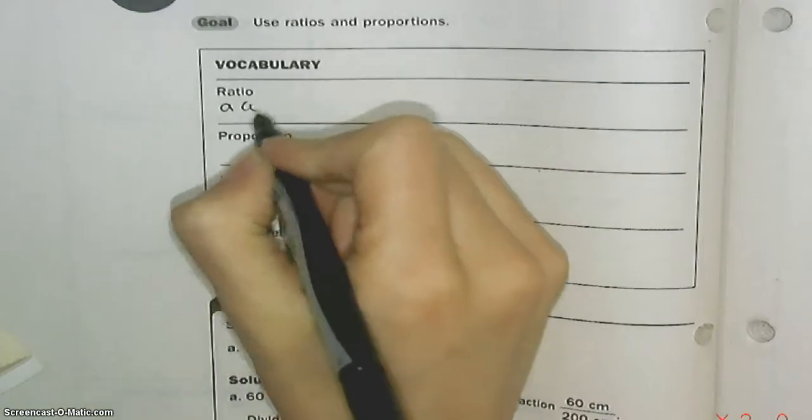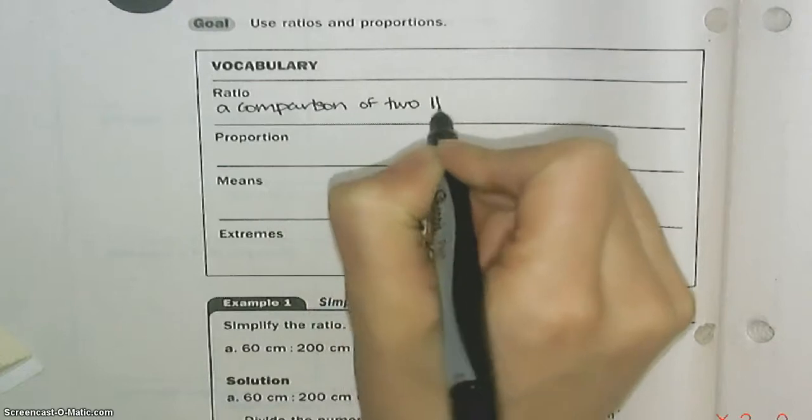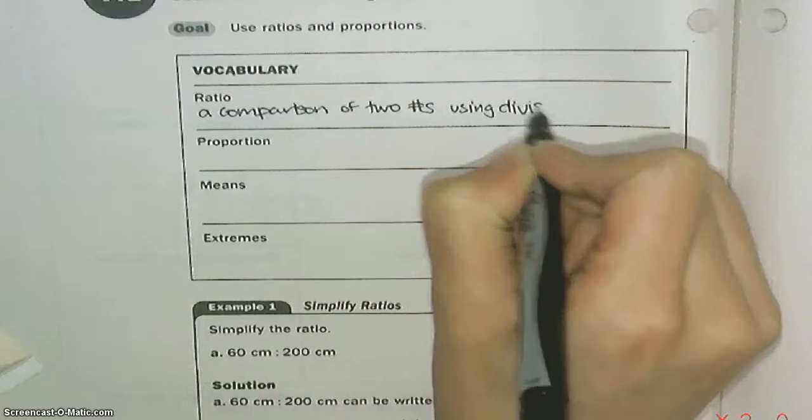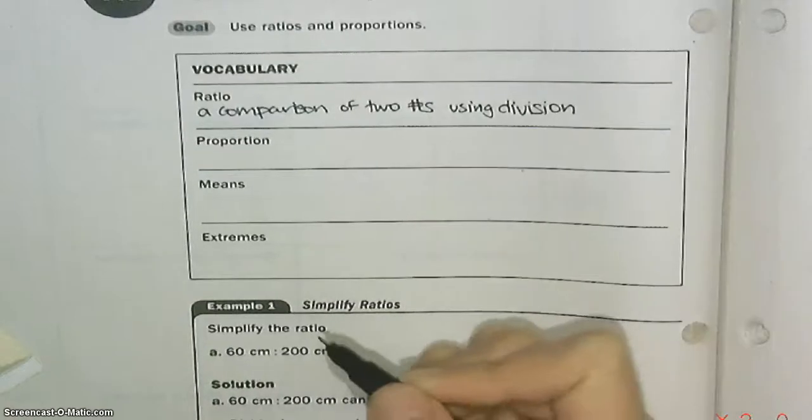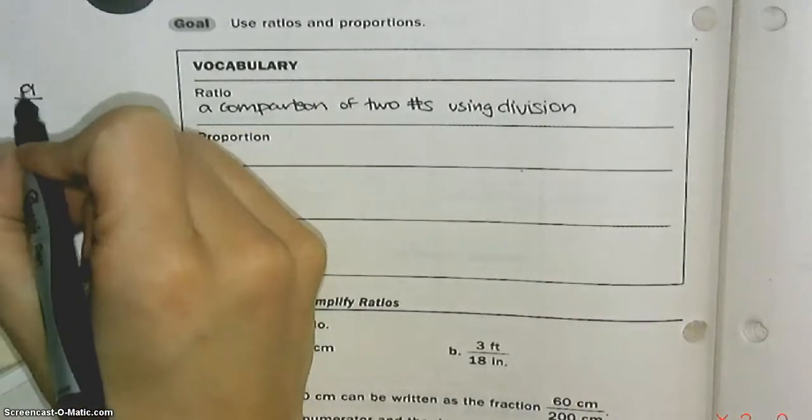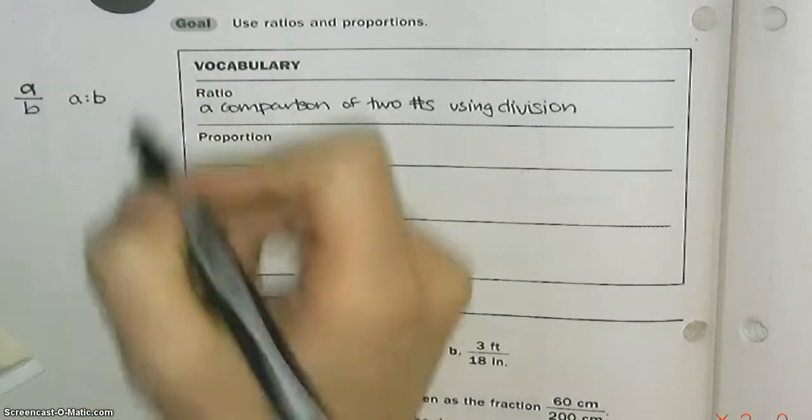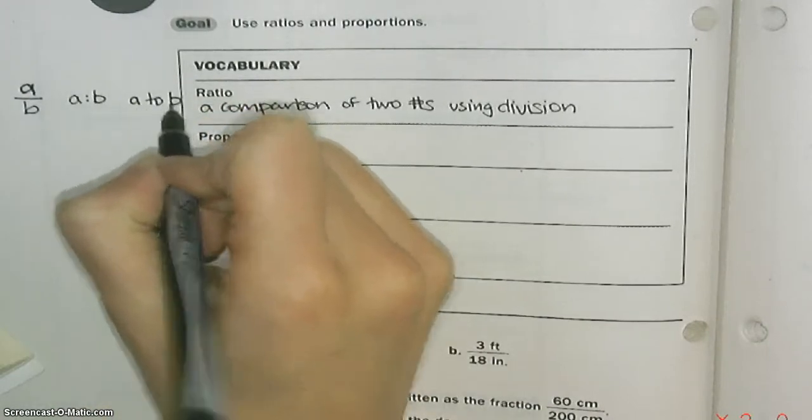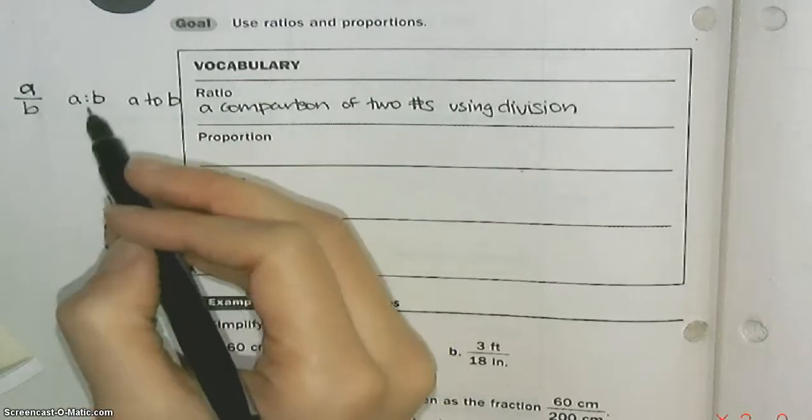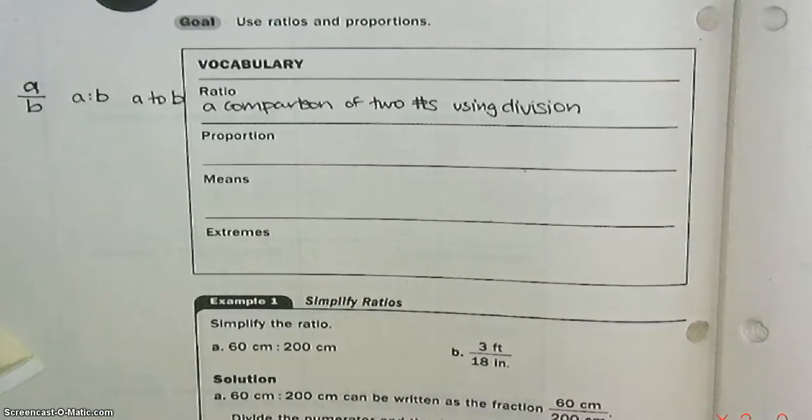A ratio is a comparison of two numbers using division. There's a couple different ways you can write this. You can write it as A over B, but you can also write this as A colon B or A to B. Like the ratio of boys to girls, maybe 7 to 10.